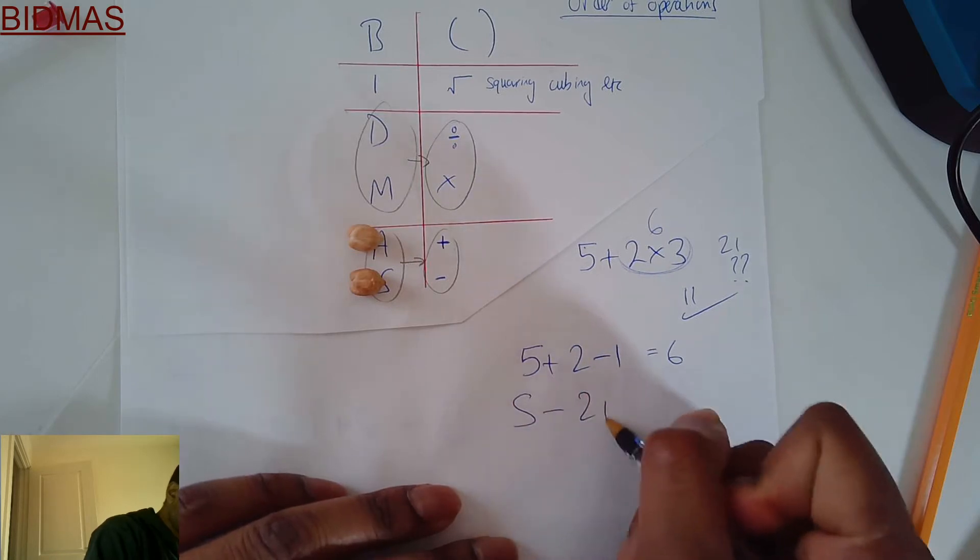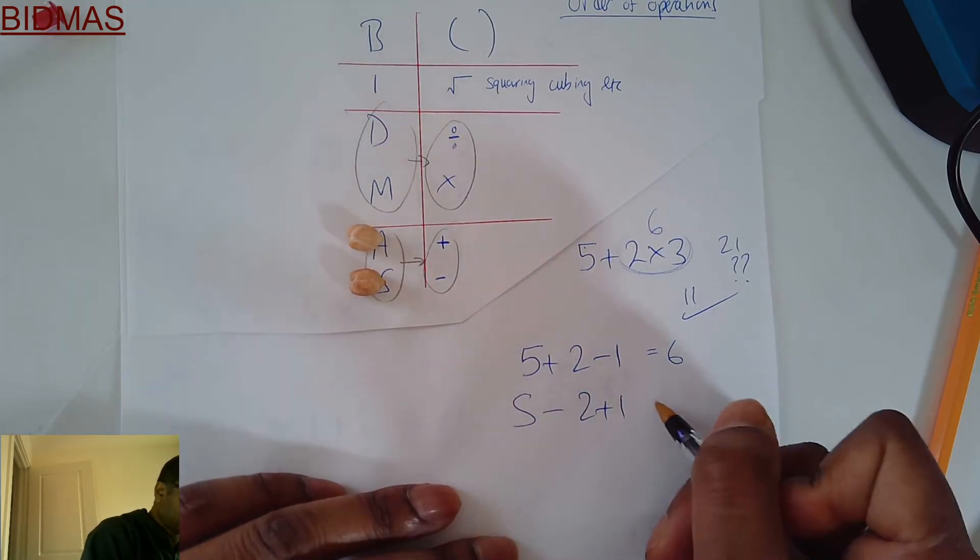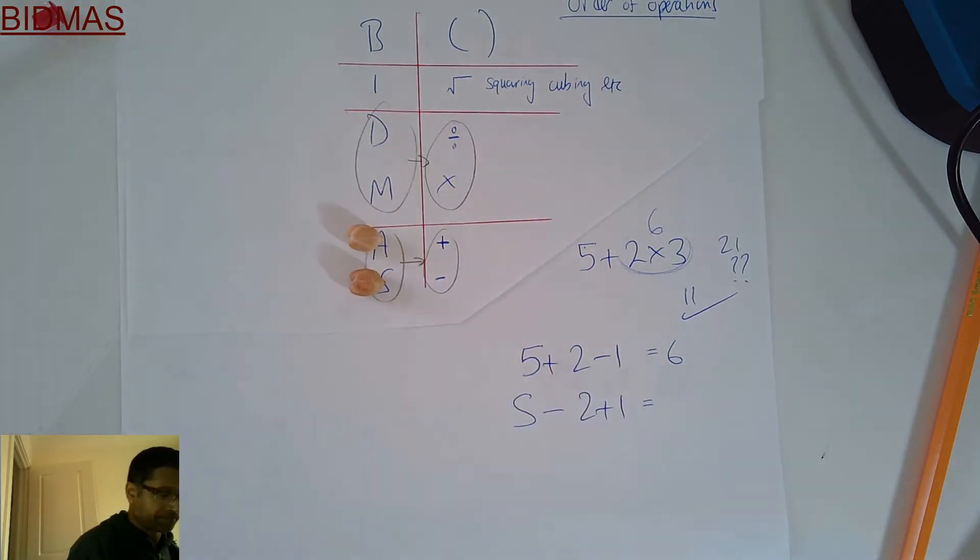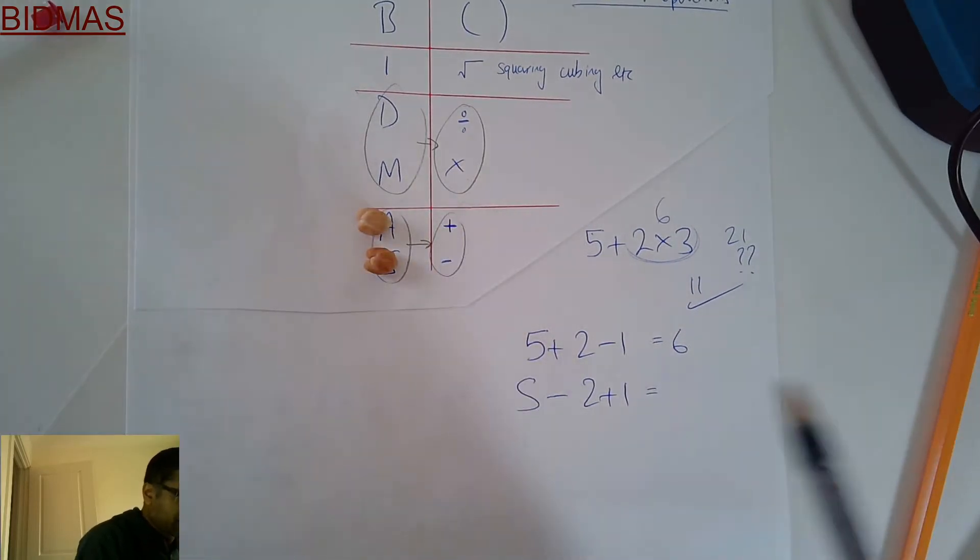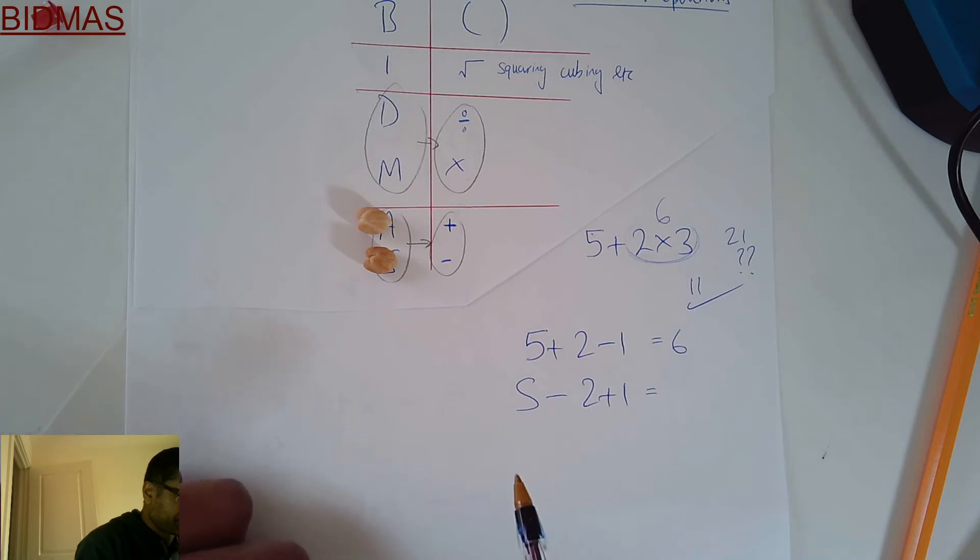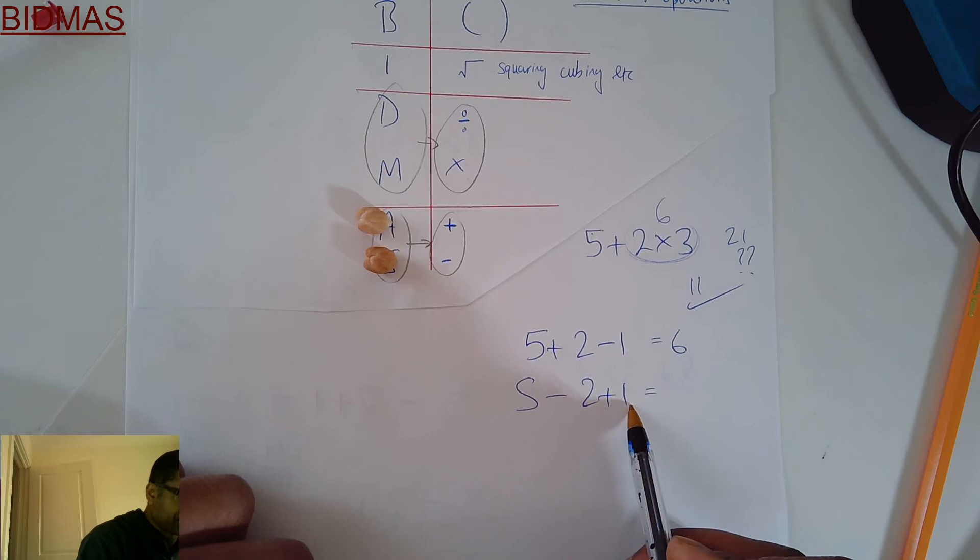But what if you had it the other way around? Let's say you had 5-2+1. Now what? Well, you're gonna say, well adding is on top of taking away, so do adding first. All right, then 2+1=3, 5-3=2.